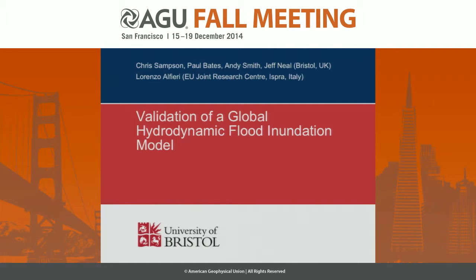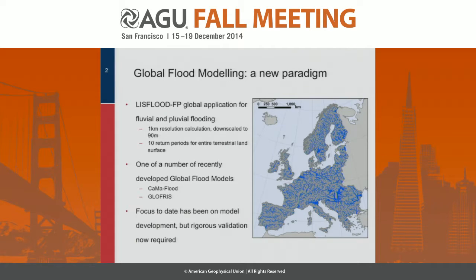This is a different LISFLOOD to the one that was being talked about in the last presentation. This is the LISFLOOD-FP, which simulates floodplain hydraulics, so it's a true hydrodynamic model. Over the last 18 months, we've been building a global application of the LISFLOOD-FP flood inundation model for both fluvial and pluvial flooding. We're simulating floods at one kilometer resolution globally and then downscaling to 90 meter resolution, simulating 10 different return period events for the whole planet. You can think of this as one of a number of recently developed global flood models — we've got GCMs, and now we're increasingly getting GFMs as well.